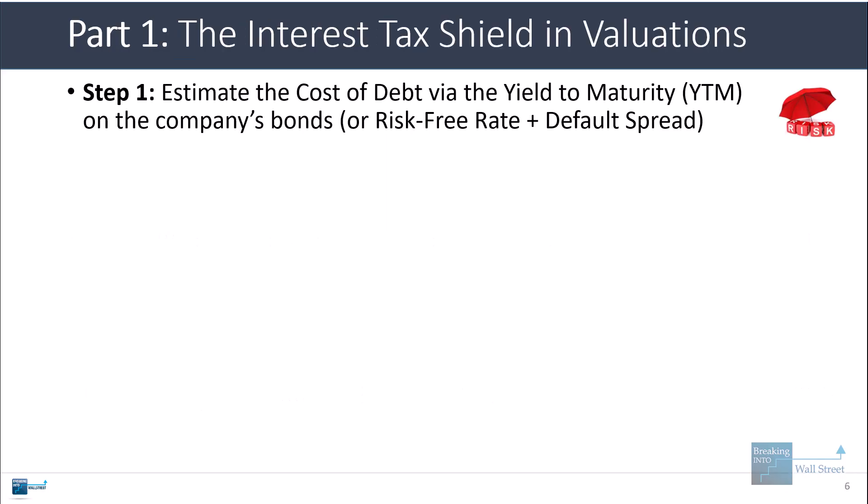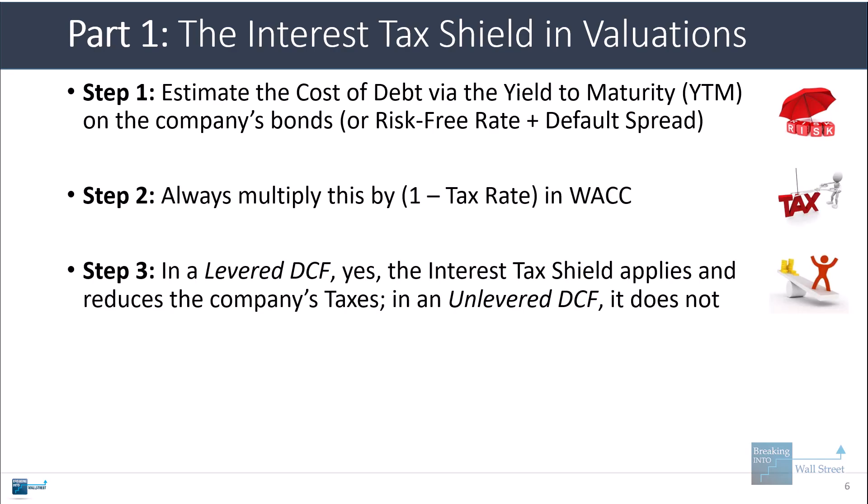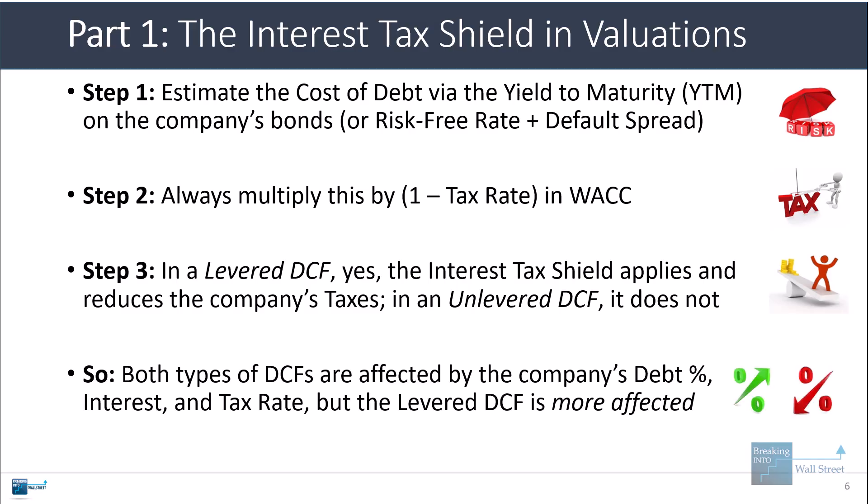In valuations, the main point is that you need to estimate the cost of debt — typically by looking at the yield to maturity on the company's bonds, or by taking the risk-free rate and adding the company's credit default spread. You multiply that by one minus the tax rate. In a levered DCF, the interest tax shield applies and reduces the company's taxes. In an unlevered DCF, it does not. Both types are affected by the company's debt percentage, interest, and tax rate, but the levered DCF is more affected.